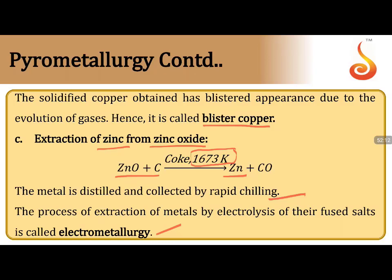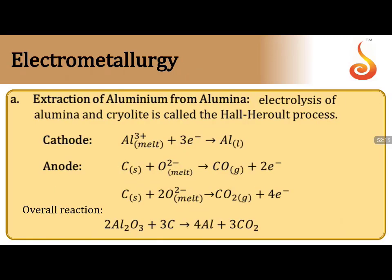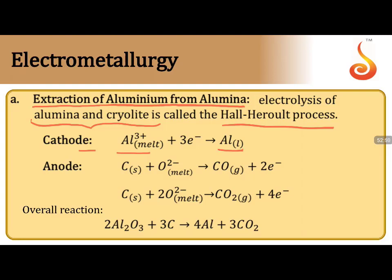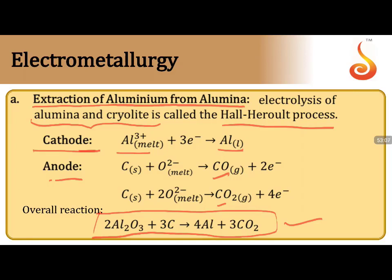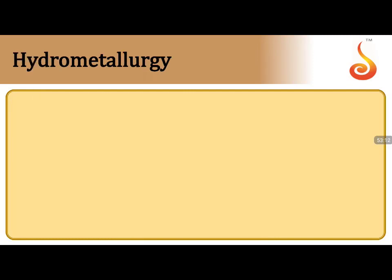Electrometallurgy — extraction by electrolysis — applies only to highly reactive electropositive metals like alkali metals, alkaline earth metals, and aluminium. In the Hall-Héroult process, alumina is mixed with cryolite to decrease melting point and increase conductivity. At cathode, Al³⁺ is reduced to Al. At the anode, CO and CO₂ are released; overall, Al₂O₃ is reduced to Al giving CO₂. Remember the cathode and anode reactions.